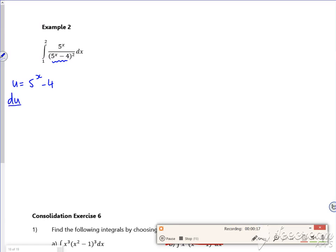If I differentiate it du/dx, so the 5 to the x is always a pain, it's going to be 1 times by log 5 times by 5 to the x and then the minus 4 goes. I want dx on its own, so I've got du over log 5 times by 5 to the x is dx.